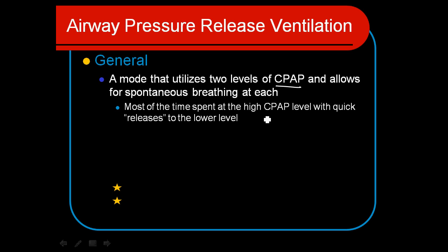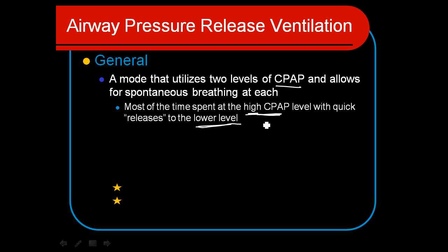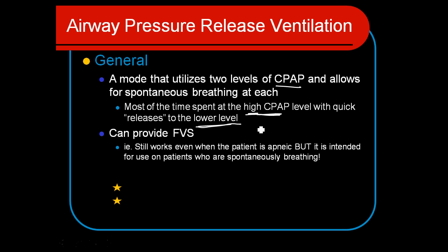What's interesting about this is that we cycle back and forth between these two levels of high pressure and low pressure — two levels of CPAP — and the patient breathes regardless of those two levels being achieved in the lungs. That's why we call it airway pressure release ventilation, because often the inspiratory phase is very prolonged compared to the expiratory phase. We actually have longer periods of time at the high CPAP level than at the lower level, and we often have inverse I:E ratios.